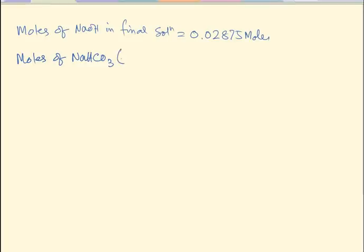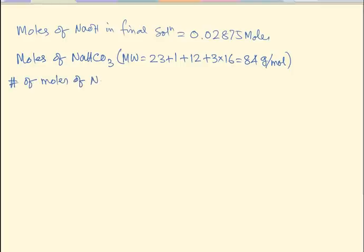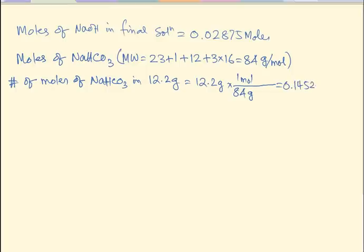For sodium bicarbonate, the molar mass is: sodium is 23, hydrogen is 1, carbon is 12, plus 3 times 16 for oxygen — that comes to 84 grams per mole. So the number of moles of sodium bicarbonate in 12.2 grams equals 12.2 grams divided by 84 grams per mole, giving 0.1452 moles of sodium bicarbonate.